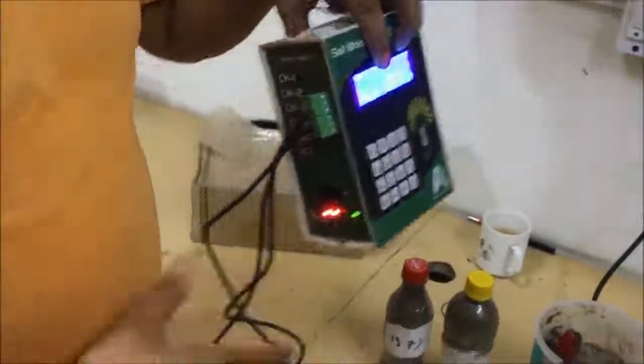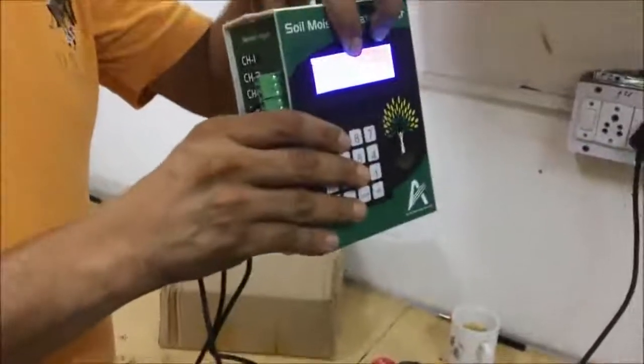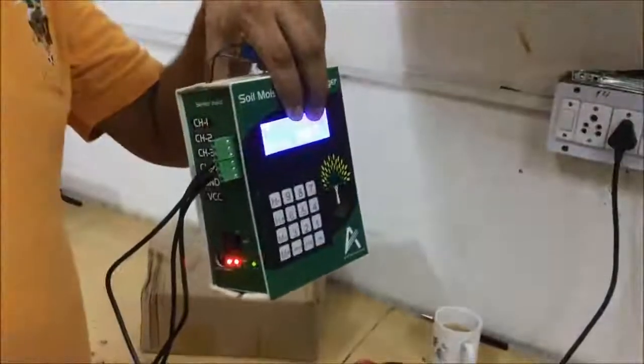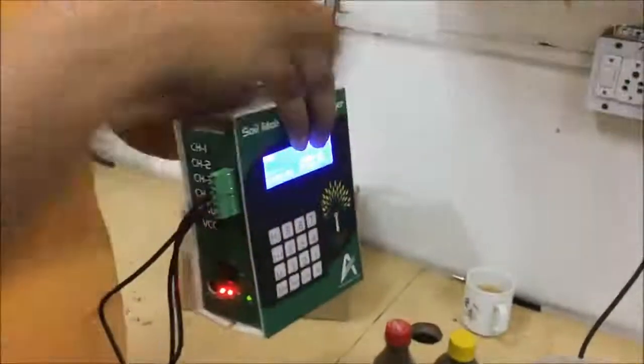These probes are at a minimum of 10 to 20 meters. So this data logger can be sitting at one place and it can give you soil moisture measurement from three or four different places.